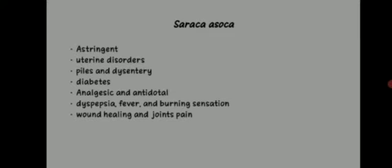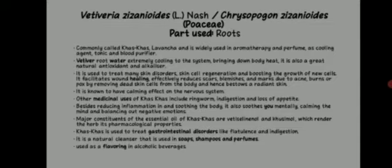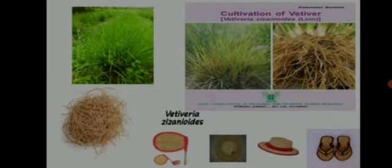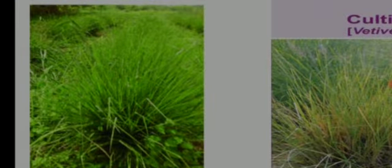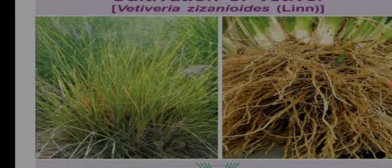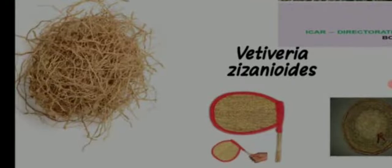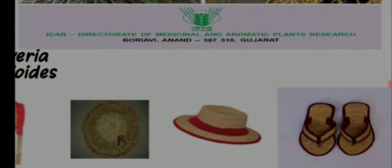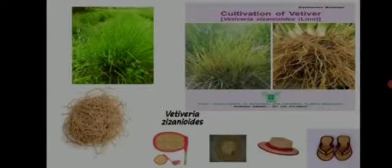Next, Vetiveria zizanioides — otherwise called Chrysopogon zizanioides, which is a synonym — belongs to the family Poaceae, the grass family. The part used is the roots. It is commonly called lavancha in Kannada or khas khas in Hindi. The roots are highly scented and are widely used in aromatherapy and perfume. The roots are also used as cooling agents, tonic, and blood purifier.